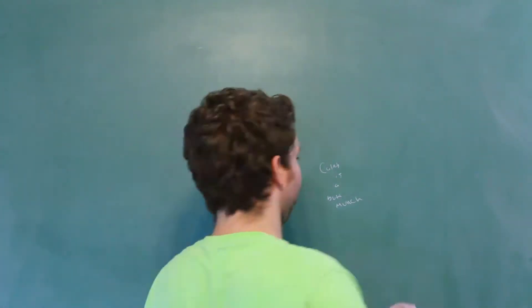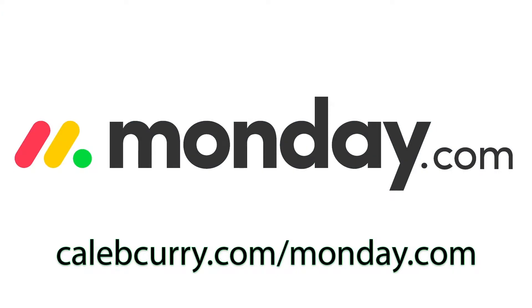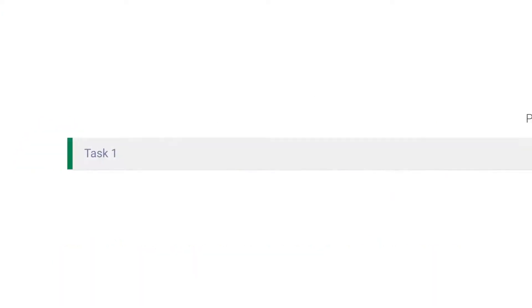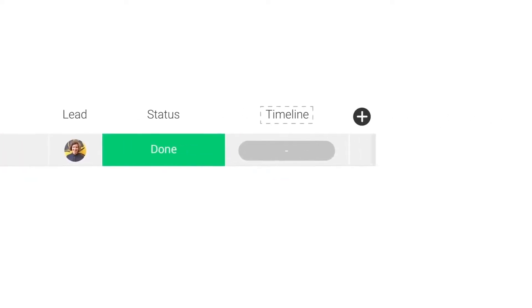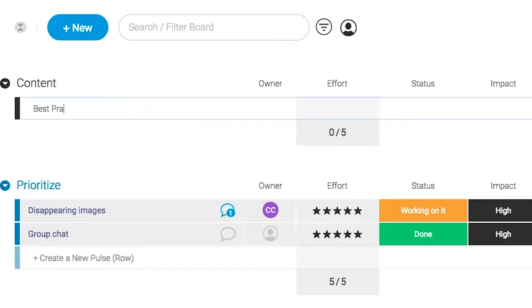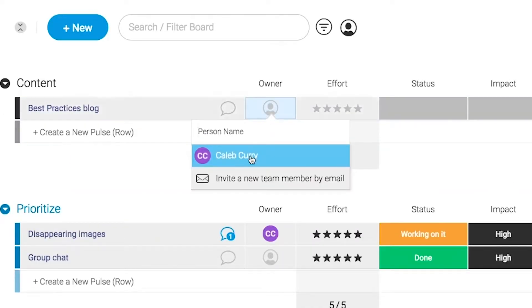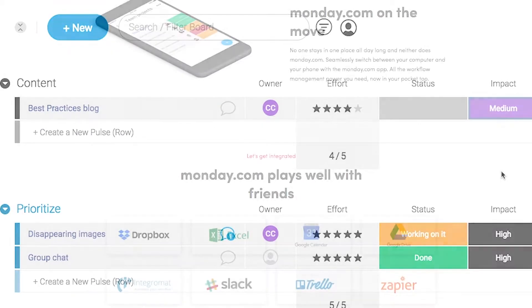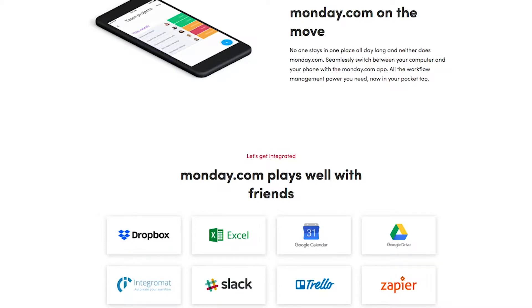Sponsored message right here. Monday.com is your visual project management solution. This is the tool that allows you to see where every task or project stands with a single glance. With a fully customizable interface, you can create the exact workflow that you need for you and your team to get stuff done. Monday.com is available on mobile and integrates well with some of the most popular tools out there. So get your life in order by giving it a try for free. Link in the description.